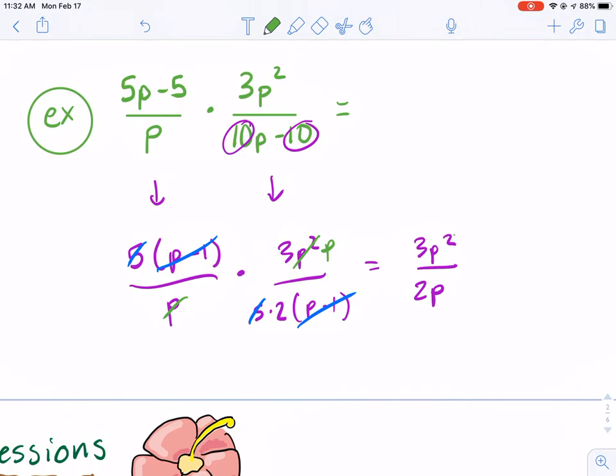So, here we recognize that we can cancel the p squared with one of the p's in the bottom and we're left with 3p in the top over 2. And that's our final answer.